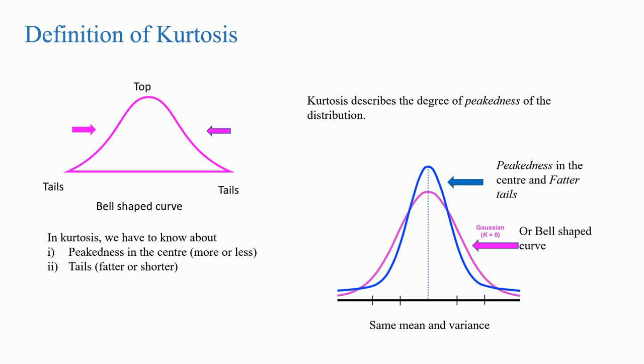Kurtosis describes this degree of peakedness of the distribution. If we look at the two curves, we can see that both curves have the same mean value and variance — the average value and the variability or spreadness are the same. In kurtosis we need to know about two things: peakedness in the center and the tails. At the end of this video I will discuss a controversy about kurtosis, showing that peakedness is not that important.